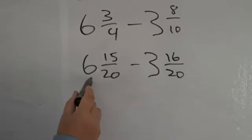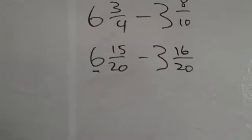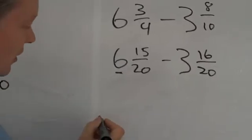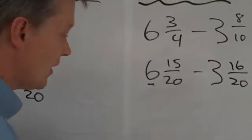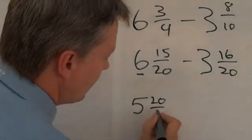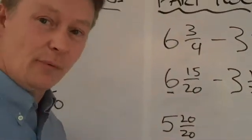Right. Okay, now, the secret with that is this number here. And what we can do is we can rewrite the number six, just the number six, as five whole ones and twenty twentieths. Can't we?